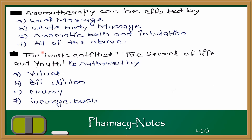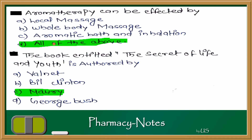Next question: the book entitled 'The Secret of Life and Youth' is authored by whom? The options are Walnut, Bill Clinton, Morrie, and George Bush. The answer is C — Morrie, who authored the book 'The Secret of Life and Youth.'